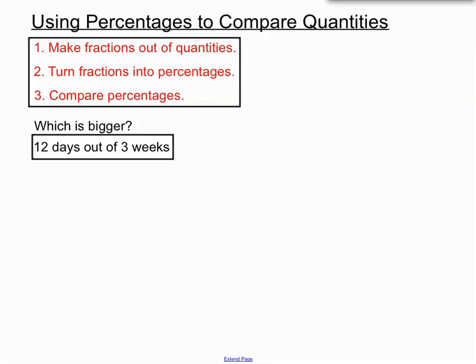Now here's our problem: we want to find out which is bigger. A situation where there's 12 days out of 3 weeks, or we want to use percentages to compare whether 48 seconds out of 2 minutes is bigger. So quite a few different quantities there. And you see we started out in the question with days and weeks and seconds and minutes. There's different units floating around all over the place.